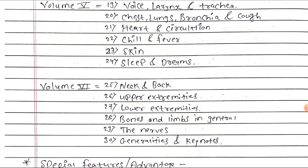Volume 6 finally contains: 25th — neck and back, 26th — upper extremities, 27th — lower extremities, 28th — bones and limbs in general, 29th — the nerves, and 30th — generalities and keynotes.